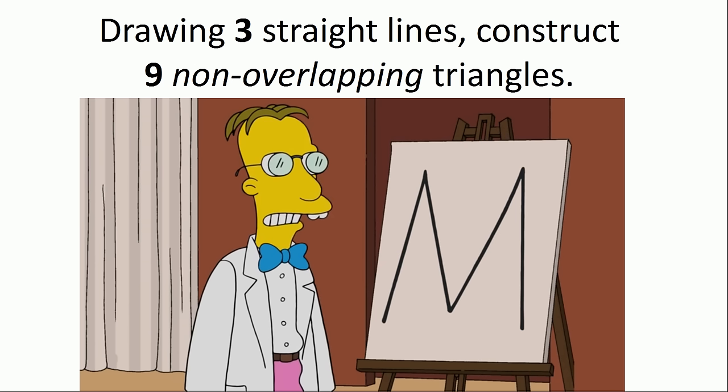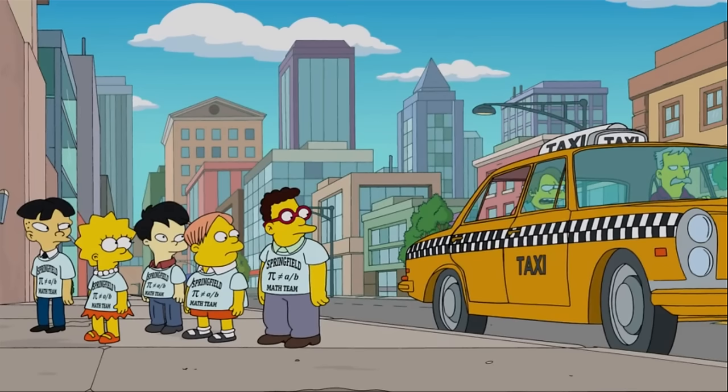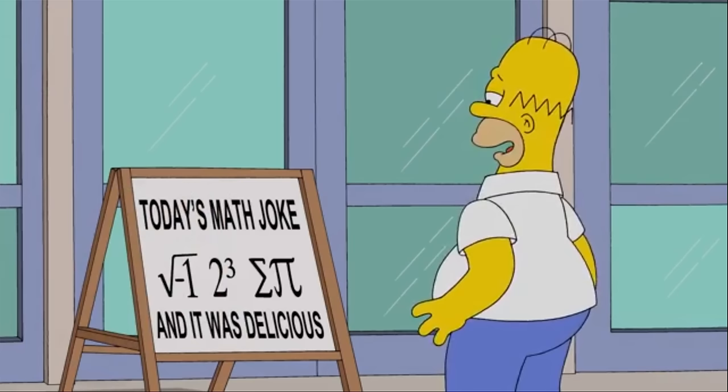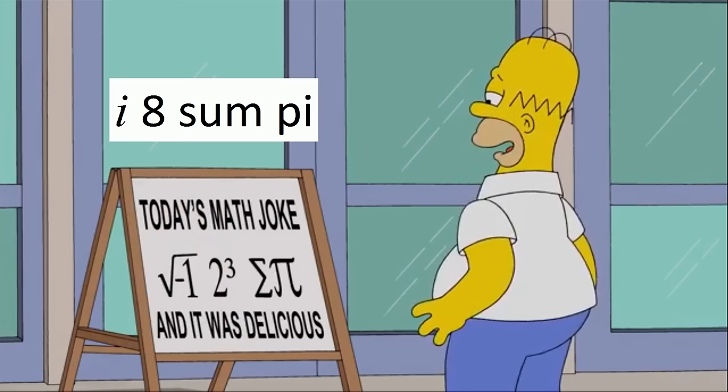I'm going to go through the rest of the math examples in the episode. The episode starts off with a very mathematical joke. The Springfield math team has t-shirts that say pi is not equal to A over B, which of course refers to the fact that pi is irrational. There's also a corny math joke — when you solve the expression and read it out loud, you get a very corny joke.